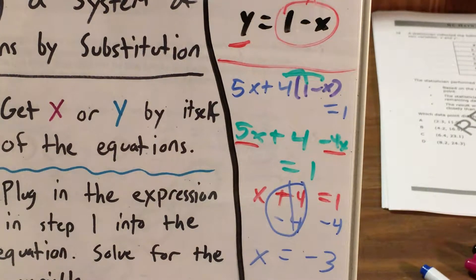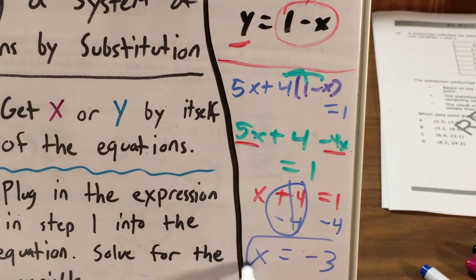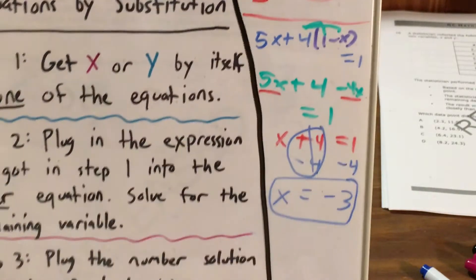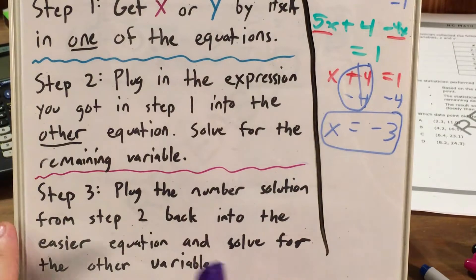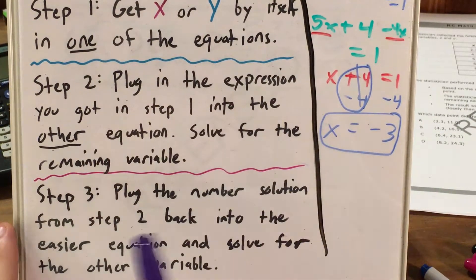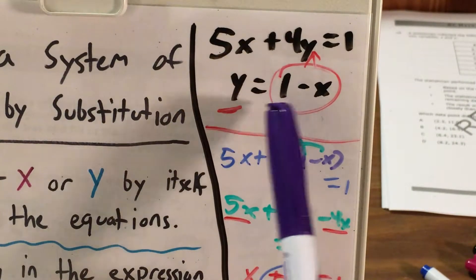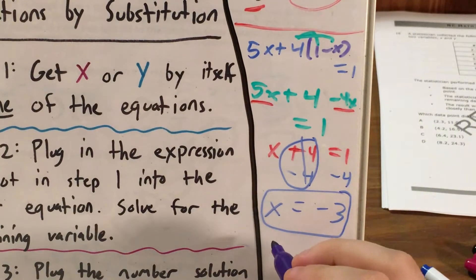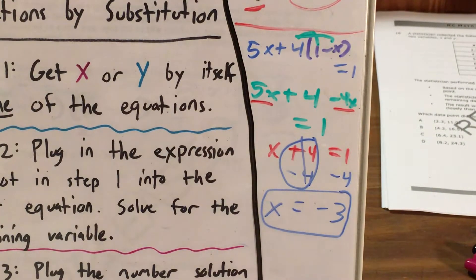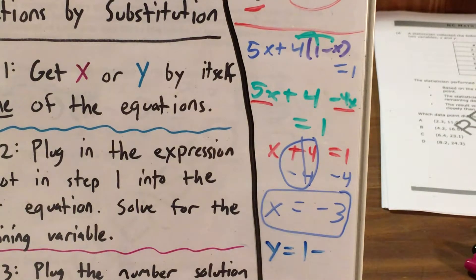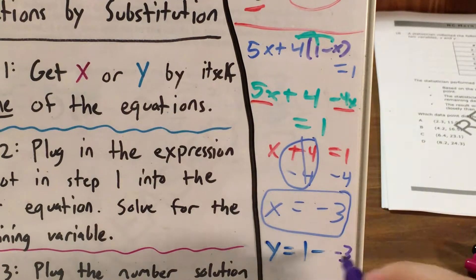Now, I am going to do step 3 just for the sake of finishing the problem, even though this is my answer. But just for the sake of showing exactly how a complete problem like this works, I'll do step 3, which is to take my number solution from step 2, so x equals negative 3, and plug it back into the easier of the two equations I'm given. And I'm going to say that that's this, y equals 1 minus x. So now, instead of y equals 1 minus x, I'm going to write this as 1 minus negative 3.